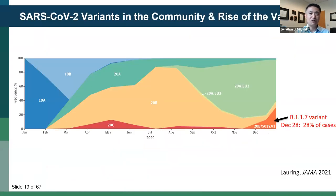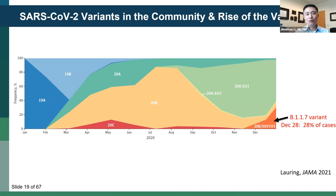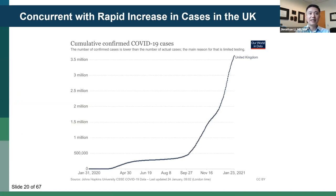This data from the United Kingdom shows all the variants present in the community last year — each color representing a different variant throughout 2020. This pandemic has always comprised a collection of different variants. So why are we concerned now? Starting in December, there was a rapid rise in B117, concurrent with a rapid rise in cases in the UK despite lockdowns, suggesting this particular variant was able to spread more easily.